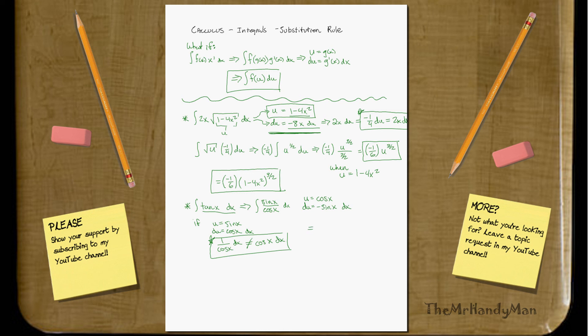That way, when you plug this in, when you get the whole thing, you should have essentially 1 over u, right? 1 over u and a negative du.